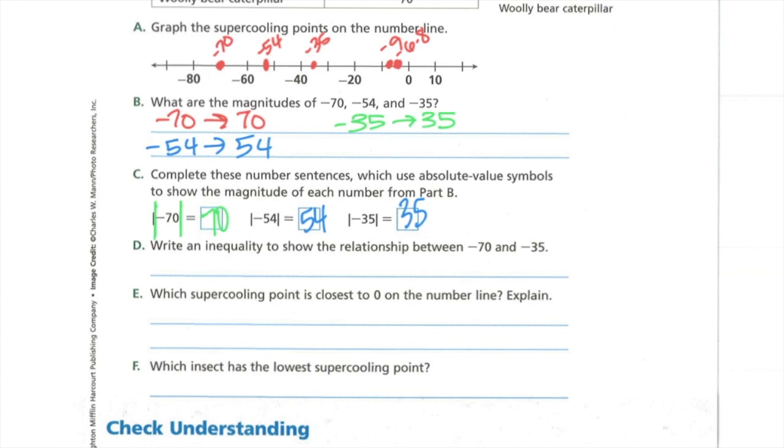Write an inequality to show the relationship between negative 70 and negative 35. Inequality is a vocabulary word that tends to throw us off sometimes. Remember, that means less than or greater than, and you have the symbols. I'm just going to use the numbers in the order they have. Negative 70 and negative 35. Which one of those is greater? Negative 35 is. So our inequality would be negative 70 is less than negative 35.